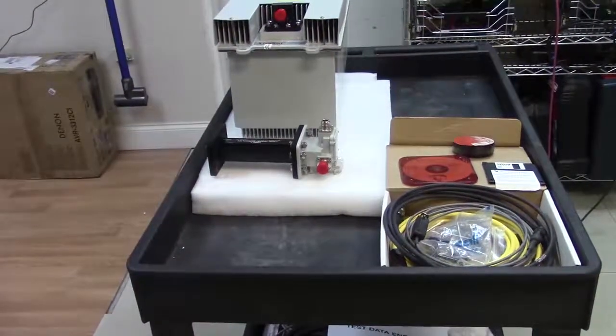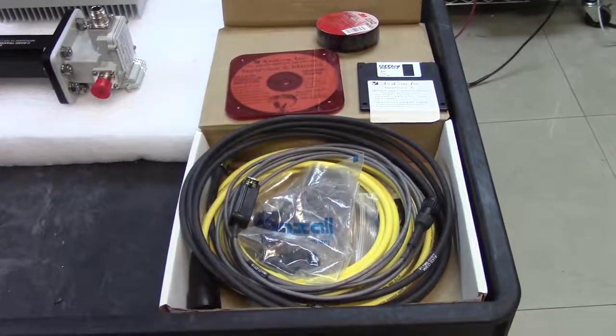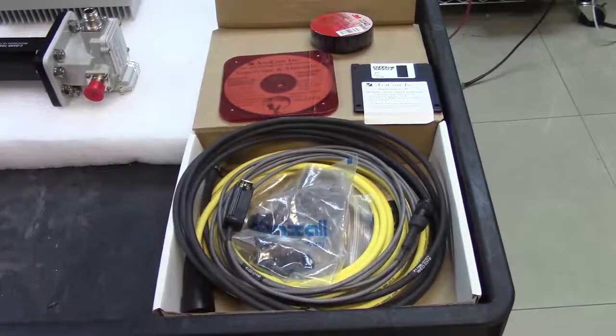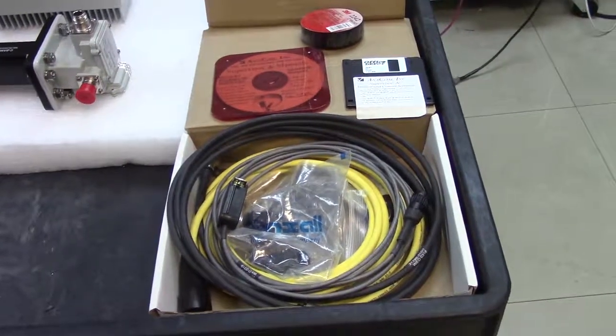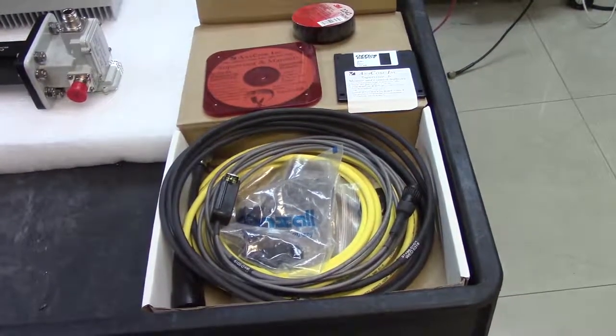Let's see what we have here. Full set of cables. The yellow one is the AC power cable. The other two are M&C cables because this is largely controlled by a computer.